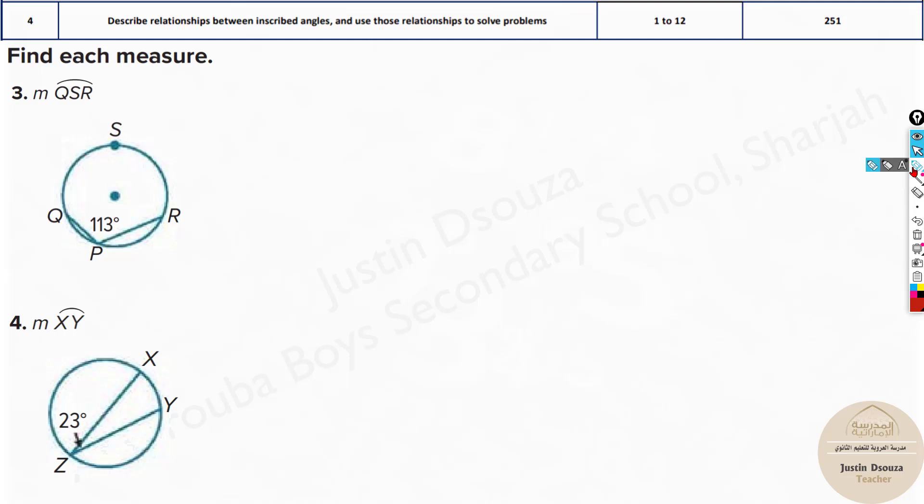Here one important thing. If it was a central angle, now imagine this was the angle. Then this and this are equal. We have done it in the previous problems. But now it's an inscribed angle. It's inscribed on any part of the circle. So that's why we take it as half. And then we can easily solve it up.